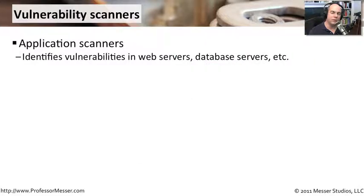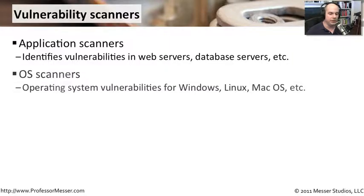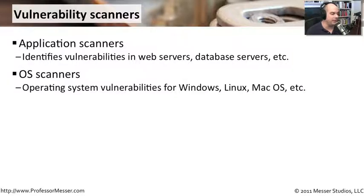Vulnerability scanners are also a very common way of identifying the risks that might be on our network. We're able to scan devices, scan our web servers, scan our database servers, and identify if any of them might be susceptible to problems. We can also identify our operating systems — Windows, Macintosh, Linux — and identify known vulnerabilities associated with those specific operating systems. Just because you're running Linux, Mac, or Windows doesn't make you more or less of a risk; you have to make sure you're covering all of the bases.